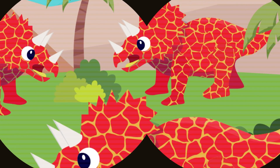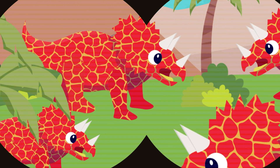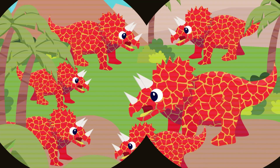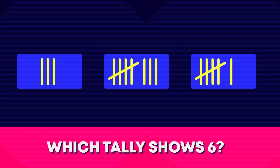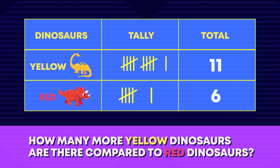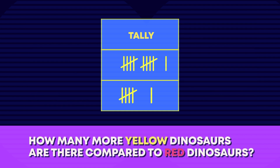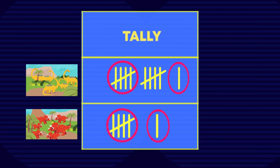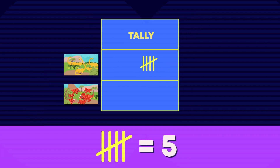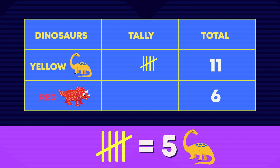Look over there. The few school rangers spotted six red dinosaurs. We need to add this to our telechart. Which of these tallies shows six? Great work. This bunch of tallies is equal to five plus one is six. How many more yellow dinosaurs are there compared to red dinosaurs? One way to find the difference is to compare tallies. There's a set of five and one single telemark for each. That leaves five. There are five more yellow dinosaurs than red.